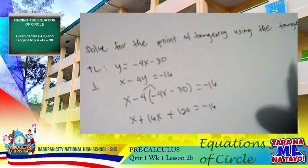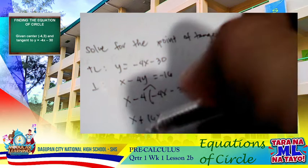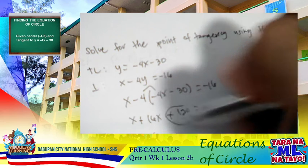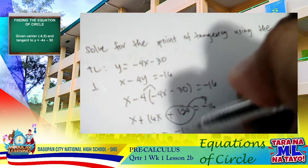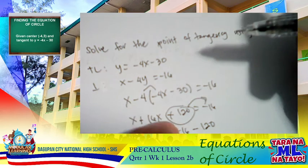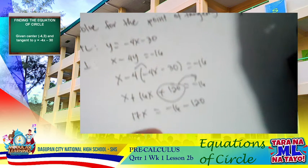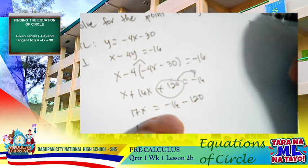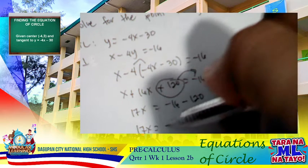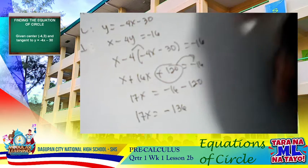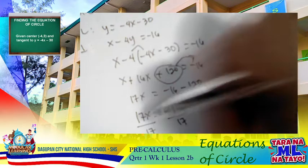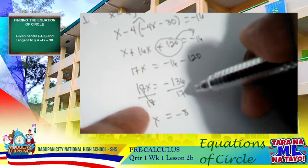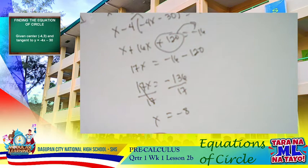Combining like terms, x plus 16x is 17x. Transposing 120 to the other side gives 17x equals negative 16 minus 120, which equals negative 136. Dividing both sides by 17, our value of x is negative 8.